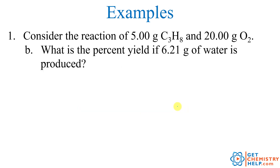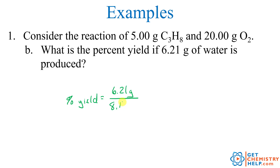Now for Part B: what is the percent yield if 6.21 grams of water is actually produced? Theoretically we could make 8.17 grams, but we only made 6.21 grams when we actually ran the reaction. The actual yield — which must be given to you, as you have no way to calculate it — divided by the theoretical yield of 8.17 grams, times 100, gives 76.0%. That is the percent yield for this reaction.